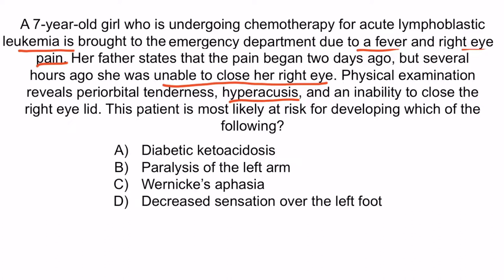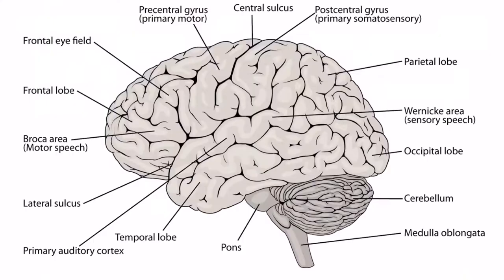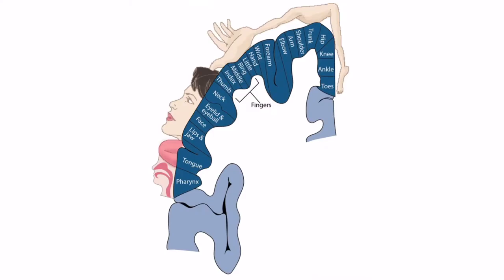With this in mind, the correct answer is B — paralysis of the left arm. This is because mucor and rhizopus species can cause a frontal lobe abscess, and the primary motor cortex is located in the frontal lobe. The frontal lobe is right here in this brain image. If a frontal lobe abscess is large enough, it can compress the primary motor cortex in the precentral gyrus, and this can result in contralateral paralysis. Looking at the homunculus showing the motor areas that correspond with the brain, the frontal lobe abscess must have been compressing the primary motor cortex associated with the right arm. The point is that you should know that a mucor and rhizopus infection can cause a frontal lobe abscess, and that the primary motor cortex is located in the frontal lobe.